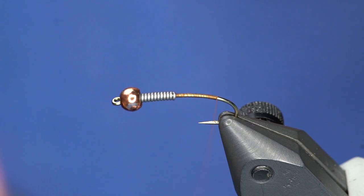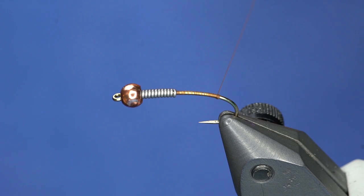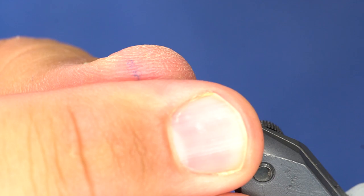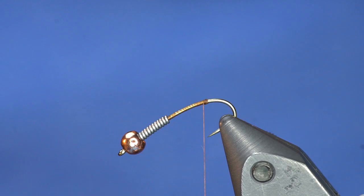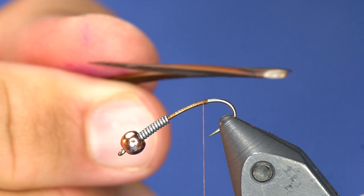So what I'm going to do is just make a little bit of a bump here. Because I'm going to put a split biot tail. So pretty small bump but just something for the biots to kick off of. And then I like to take the hook and put it in the vise about like this. This curve in the hook shank kind of makes it a little bit more difficult to get in behind the hook.